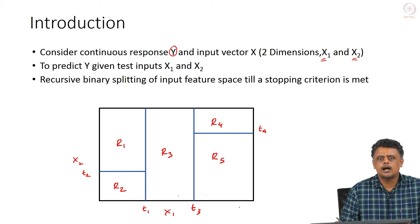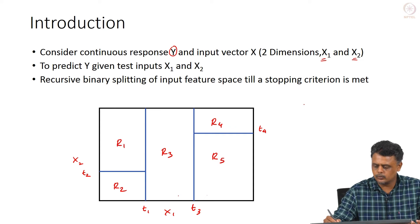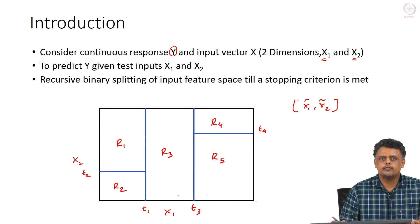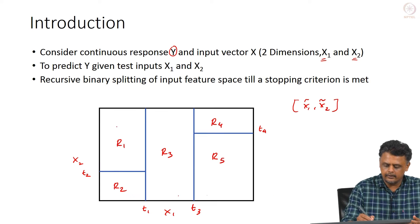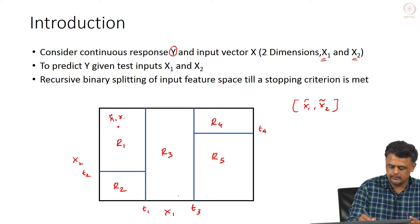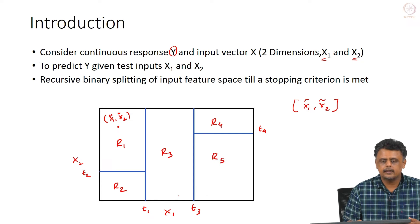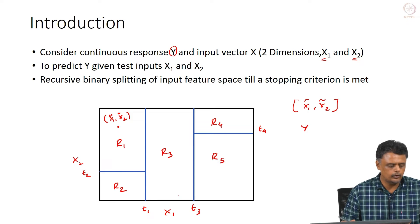Once we have these regions, how do we determine the output for new test data? Let us say we have test data with some value X1-tilde and X2-tilde given. If X1-tilde and X2-tilde fall into region R1, then how do we determine what Y would be? That is what we are going to look at now.